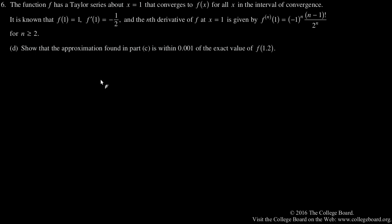Based on this material, the general term for this Taylor series evaluated at 1.2 is going to be: the nth term is negative 1 to the n times (n minus 1) factorial over 2 to the n, all over n factorial, times one-fifth - that's (1.2 minus 1) to the nth power.